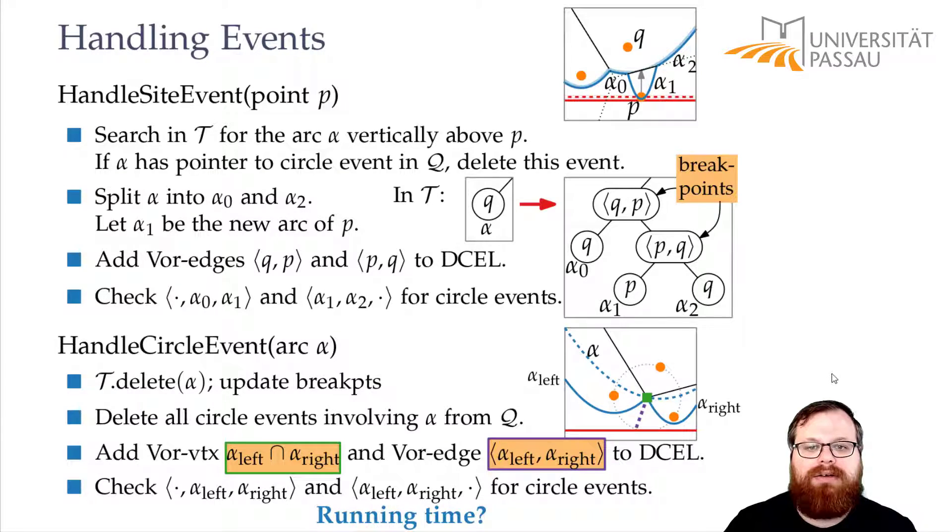What is the running time of this algorithm? For each of these steps, let's see. Here we have to search in data structure, it takes log n time. We do some stuff, we split it, that's fine. Add stuff here, that's fine. Find new circle events. So this we can do in logarithmic time.